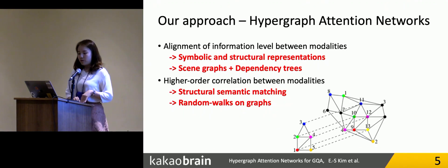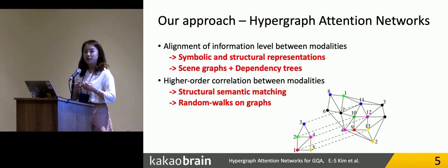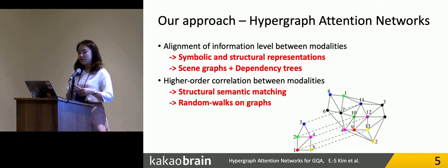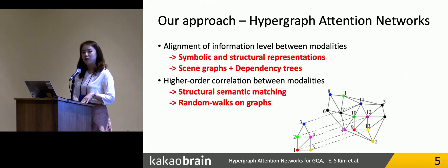For the second problem, to consider the higher-order correlation between modalities, we suggest matching the two graphs, because for the image and question representation, we transform those two modalities into graph forms. So we try to match the two subgraphs. But unfortunately, as the subgraph matching problem is one of the NP-hard problems, we suggest an approximate approach to subgraph matching using comparing the semantics of just random paths on graphs.